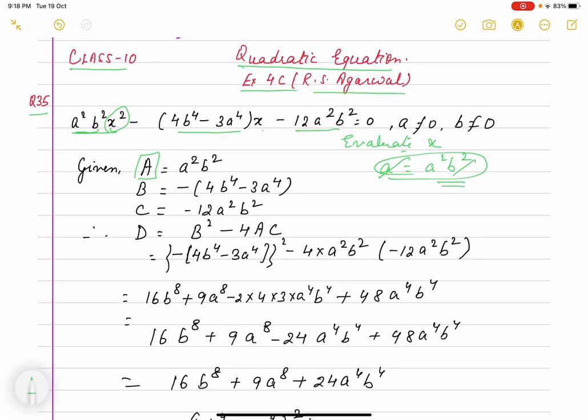We compare with the standard form of quadratic equation. The coefficient A is a²b², B is the coefficient of x which is -(4b⁴ - 3a⁴), and C is -12a²b².